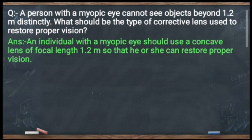Chahe distance kuch bhi diya ho, itna zyada focus nahi karna — aapko sirf itna dhyan rakhna hai: myopic eye jo hai woh defective hai, aur isse correct kiya jayega by using concave lens. Myopic eye mein hum as a corrective lens concave lens use karte hain, aur 1.2 meter focal length ka use karenge, taaki hum door ke rakhe hue objects ko easily focus kar payen aur dekh payen.